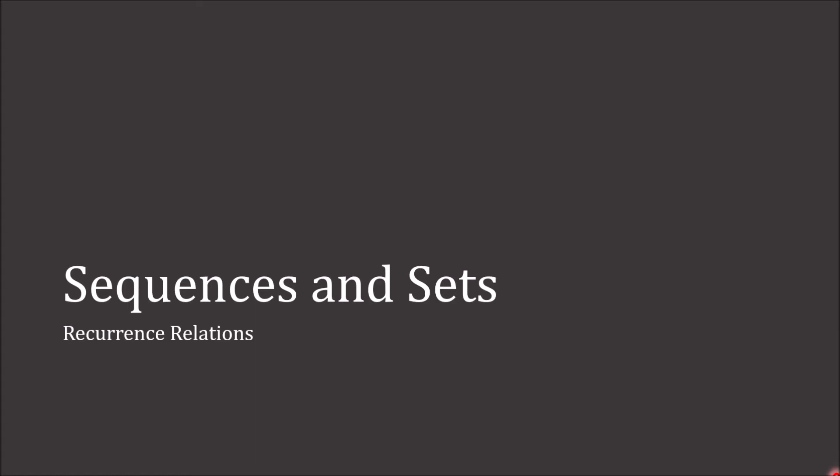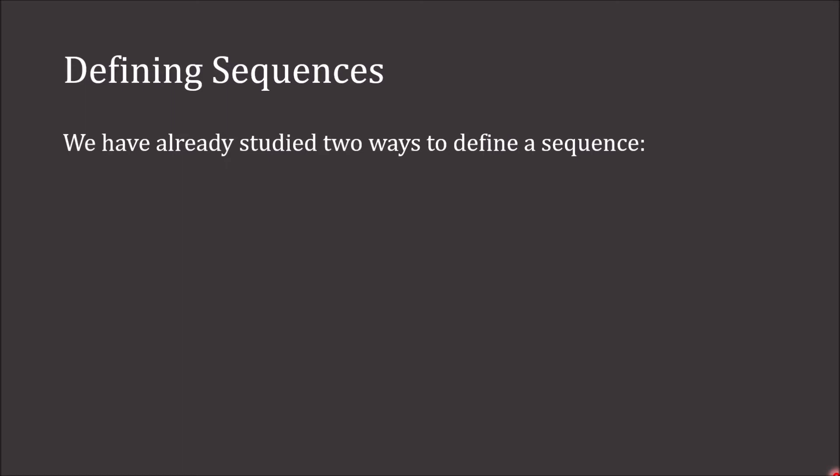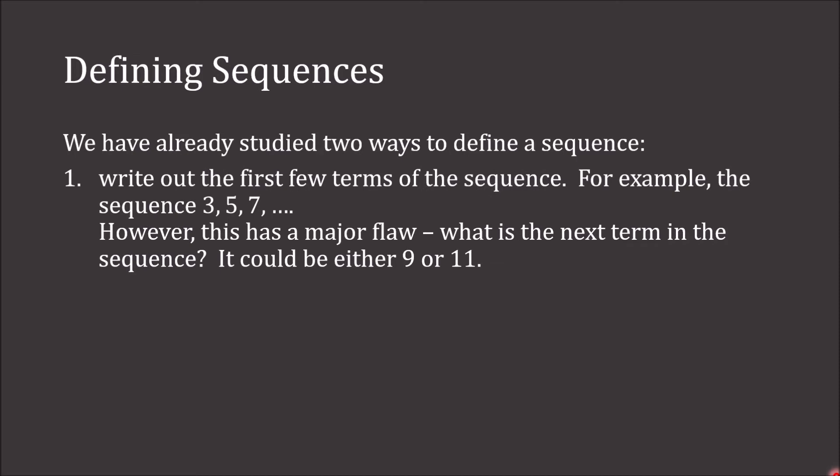We now study recurrence relations. We have seen or studied two ways of defining a sequence already. The first way was to write out the first few terms of the sequence — for example, the sequence 3, 5, 7. However, this has a major flaw: we don't know what the next term is. It could be either 9 or 11. It could be all of the odd integers greater than 1, or all of the odd prime integers.